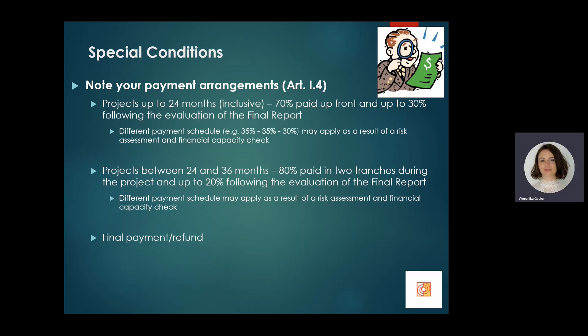Special conditions clearly define your project's payment and reporting arrangements in article 1.4. Grant agreements are issued to beneficiaries in two copies; once signed by the legal representative of your organization, they are returned to Largas to be co-signed by our executive director. Once co-signed, a first pre-financing payment is raised and made to the project's bank account as specified in article 1.5.